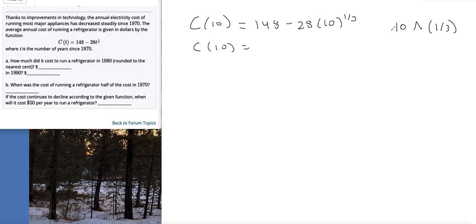So you're going to type 148 minus 28 times 10 raised to one-third. If your calculator doesn't automatically open those parentheses or move up to the exponent, make sure to get those there. When I do that I get 87.675, and rounding to the nearest cent that would be $87.68. So that would be the cost of running the refrigerator ten years after 1970, which is 1980.